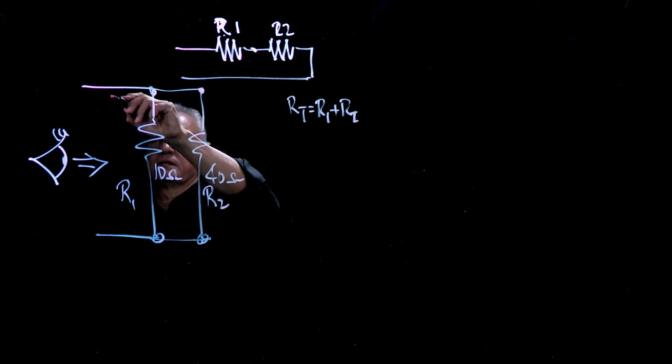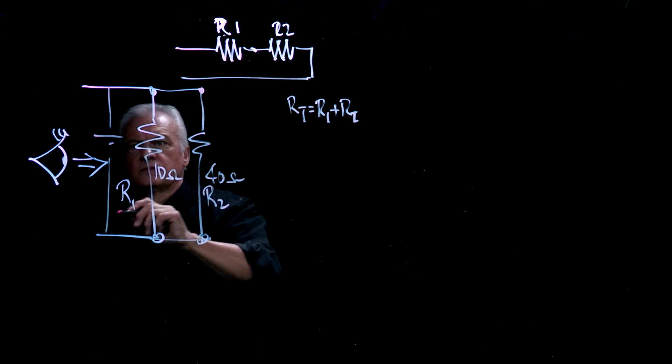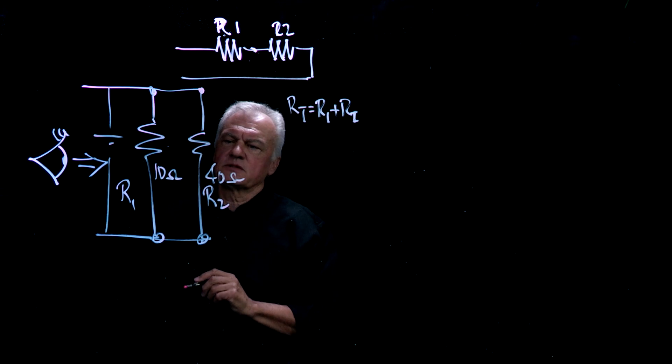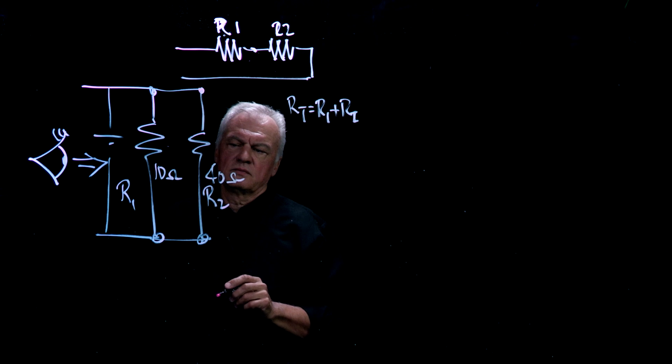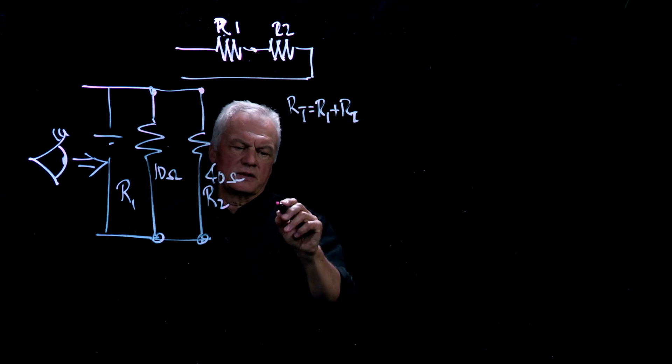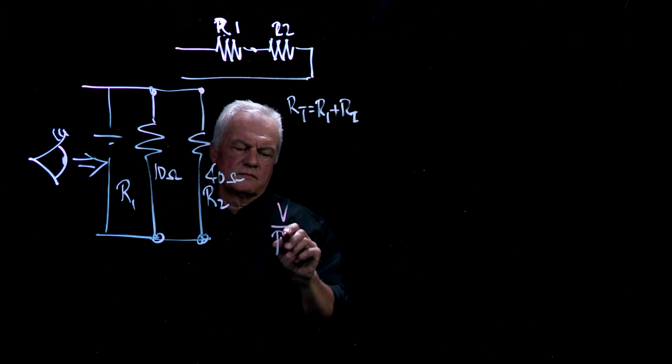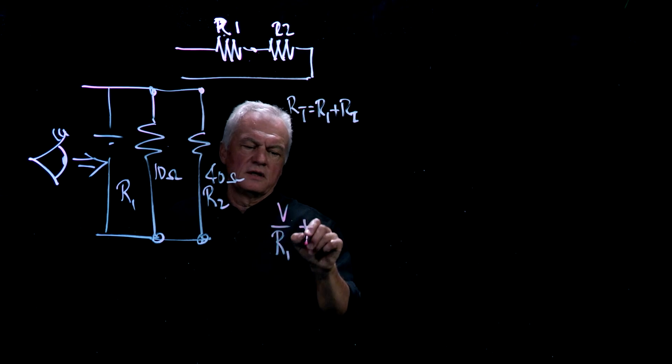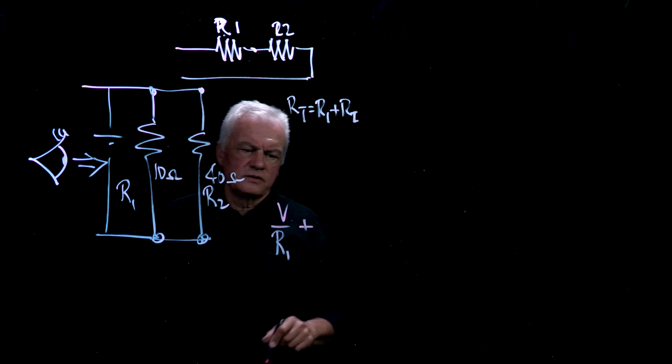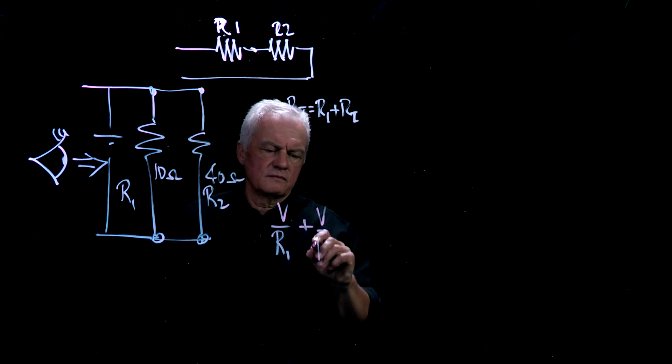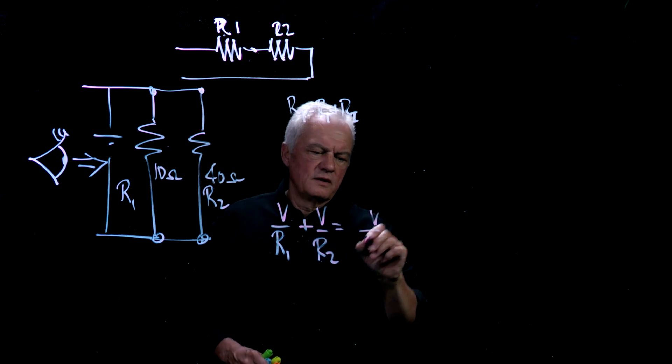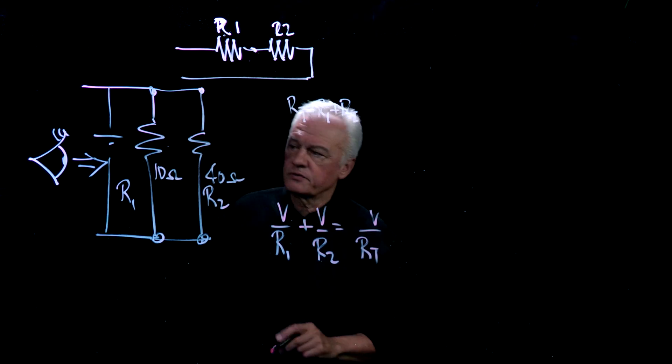If I apply a voltage here across this circuit, the voltage across R1 is going to be the same as the voltage across R2. The voltage across R1, therefore the current through R1 will be this. The voltage across R2, same voltage, is going to be the same as the source voltage across R2 plus the total resistance.